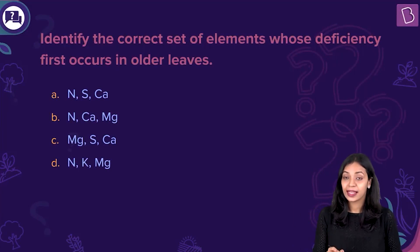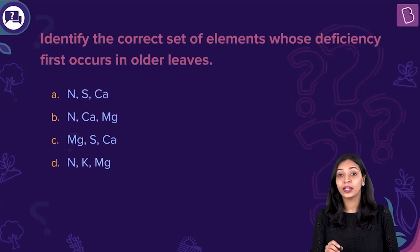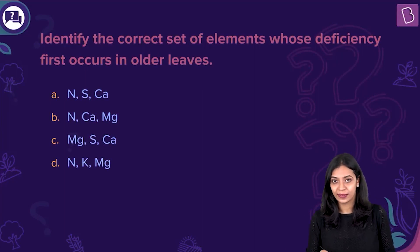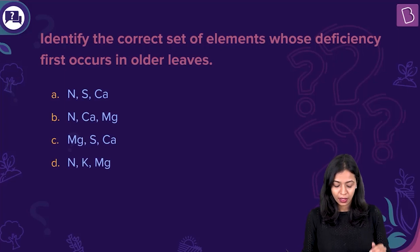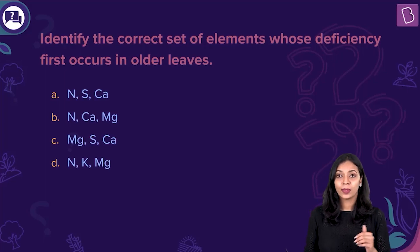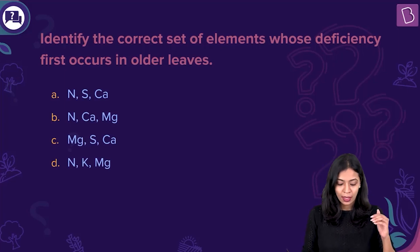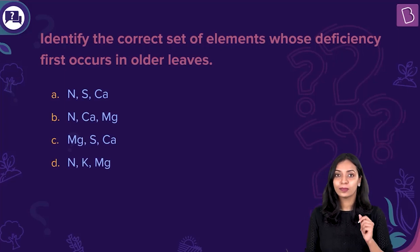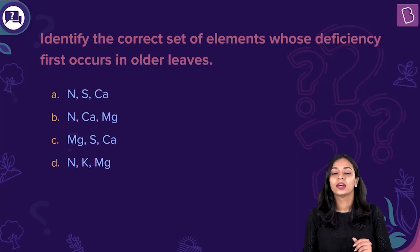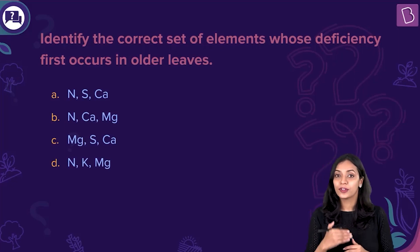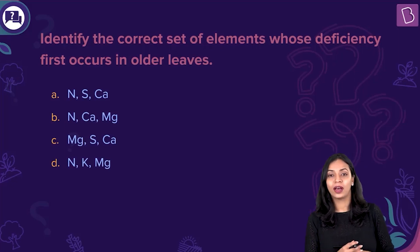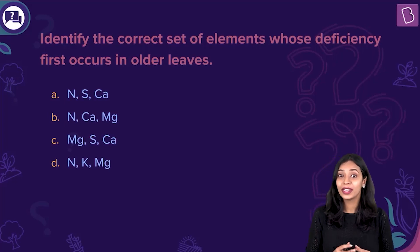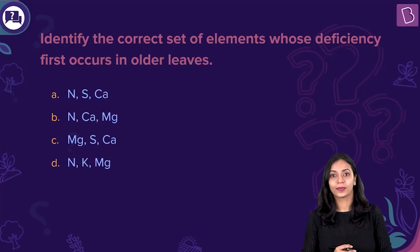Identify the correct set of elements whose deficiency first occurs in older leaves. The options are: A) nitrogen, sulfur, calcium; B) nitrogen, calcium, magnesium; C) magnesium, sulfur, calcium; D) nitrogen, potassium, magnesium. The order in which deficiency symptoms appear in a plant depends on the mobility of the element that is deficient. These essential elements can be classified into mobile elements and immobile elements.